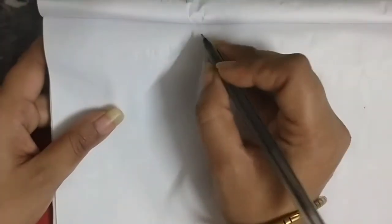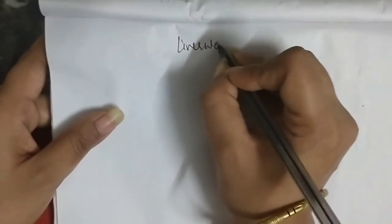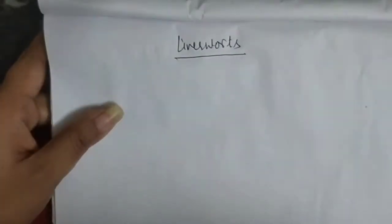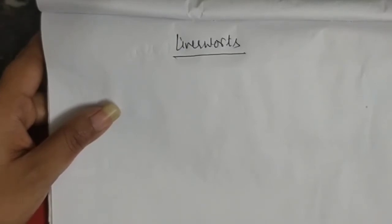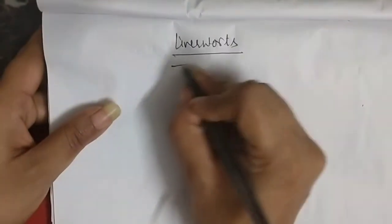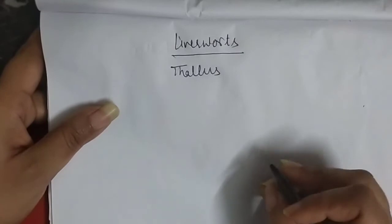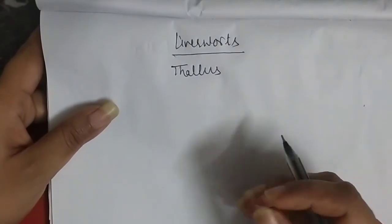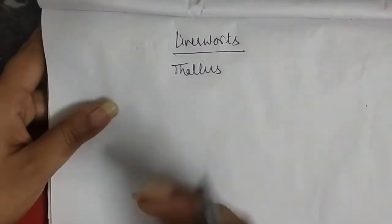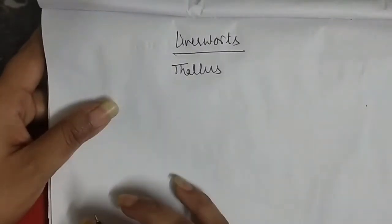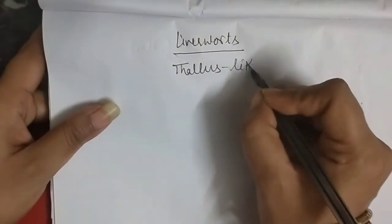Good morning Class 11 biology students. Now we are going to discuss the liverworts and mosses. Firstly, I am going to discuss the liverworts. As the word indicates, they have a liver-like structure. These liverworts are formed after the algae, so they do not have a particular plant body — they have a thallus-like structure, not a particular stem, root, or leaf. They have stem-like, root-like, and shoot-like structures, and the body resembles algae.